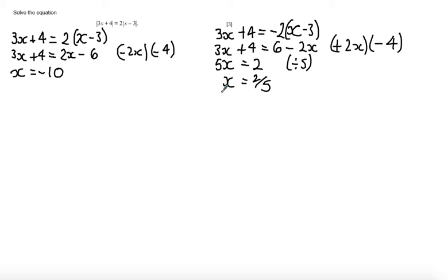Let's have a look and see how the marks are awarded in this question. There's a method mark for correctly stating that 3x plus 4 is equal to the positive version of the right hand side, and there's a method mark for saying 3x plus 4 is equal to the negative version of the right hand side.